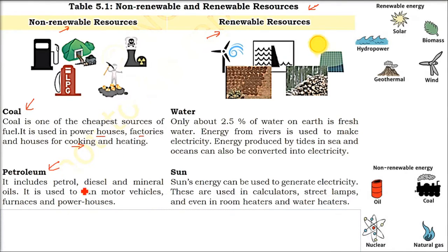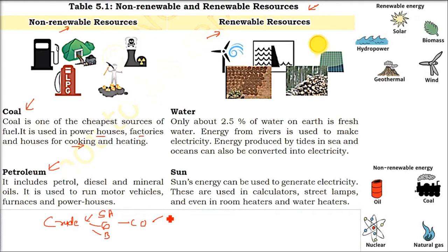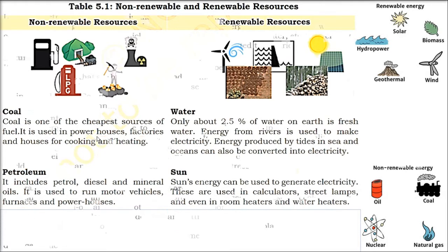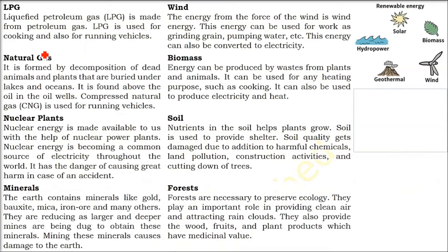One of the most important non-renewable resources is petroleum. Crude oil is found in Arab countries like Saudi Arabia, Qatar, and Bahrain, which have a lot of crude oil. We refine it to get petrol, diesel, and mineral oils. These are used in powerhouses, furnaces, and to run motor vehicles.